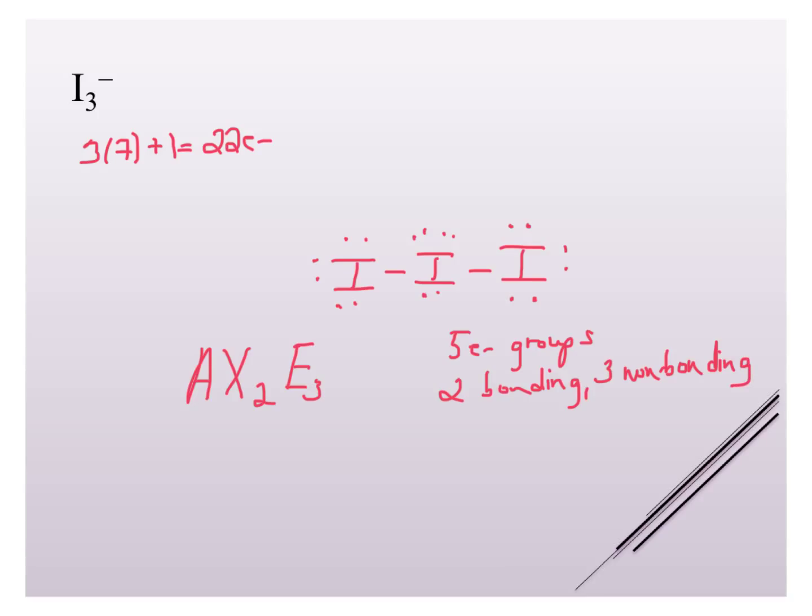And now I can see that this is going to have, for my electron pair geometry, this is going to be trigonal bipyramid, and my molecular geometry is going to be linear. Remember that the molecular geometry is based on the electron pair geometry and the balance between the number of bonding and non-bonding groups.